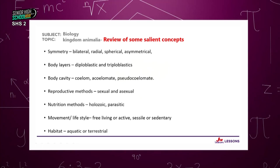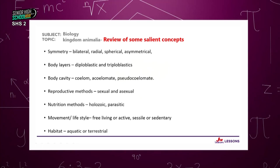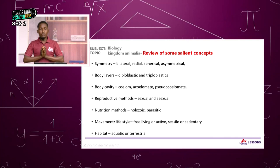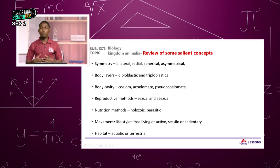I'll soon explain body layers called diploblastic and triploblastic, and also body cavity — coelom, acoelomate, and pseudocoelomate. When talking about reproductive methods: asexual involves only one parent producing young ones, while sexual reproduction requires two different parents producing gametes that fuse to form a zygote before developing into the organism.